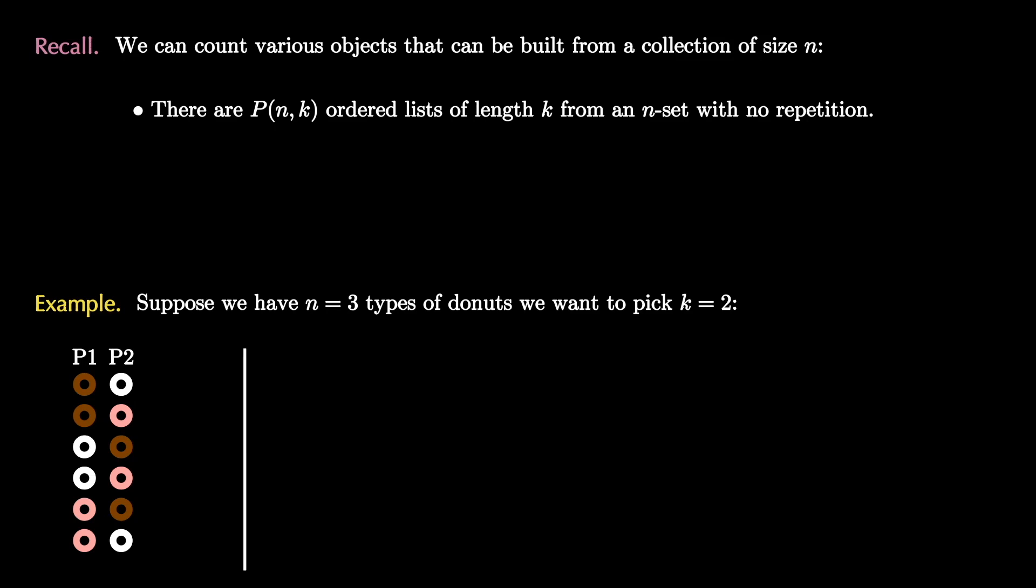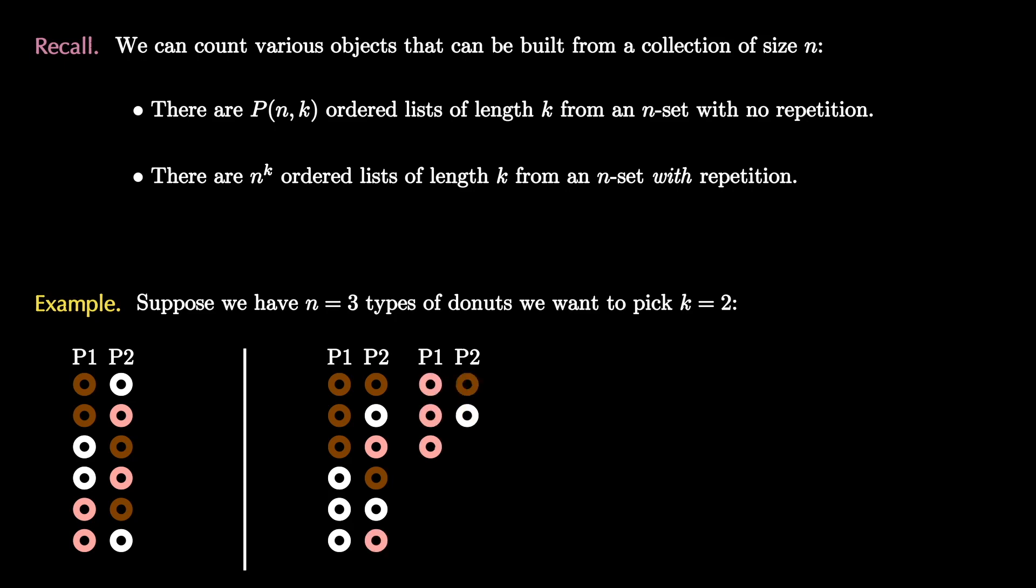Now let's consider the same scenario where there are two people but they can each pick the same donut if they like. In this case there are n to the k ordered lists of length k with an n-set, so we're allowing repetition. So in this situation person one and person two select their donuts, but this time we allow overlaps. For instance they could both have a chocolate or both have a strawberry. There are nine ways or three squared ways for this to happen.